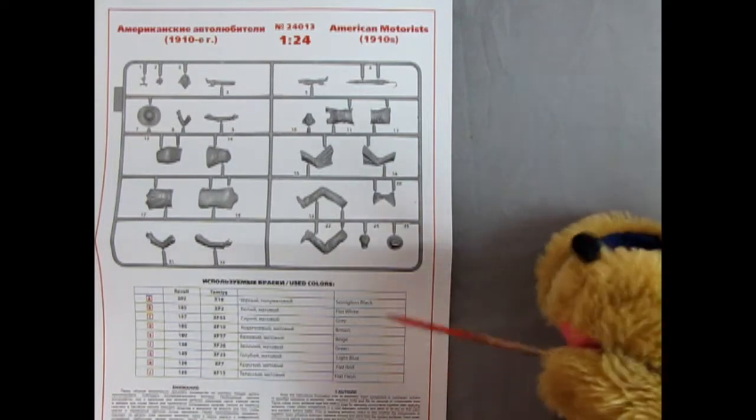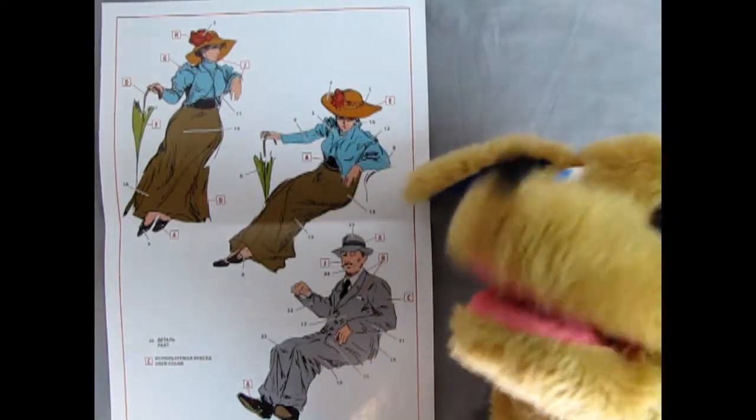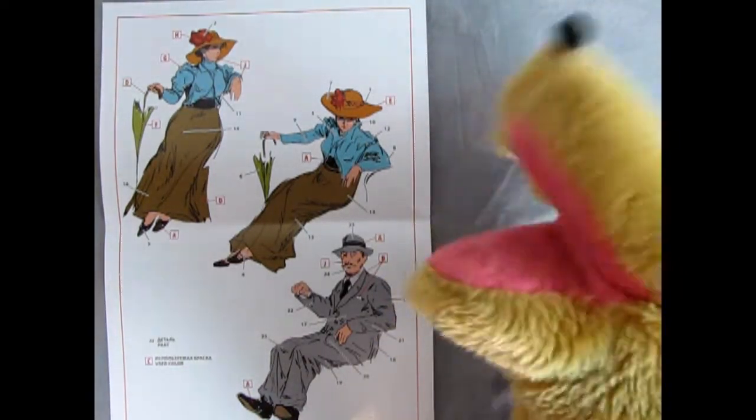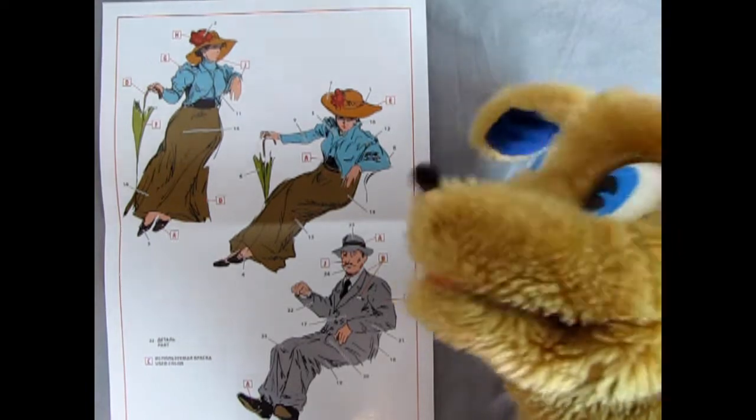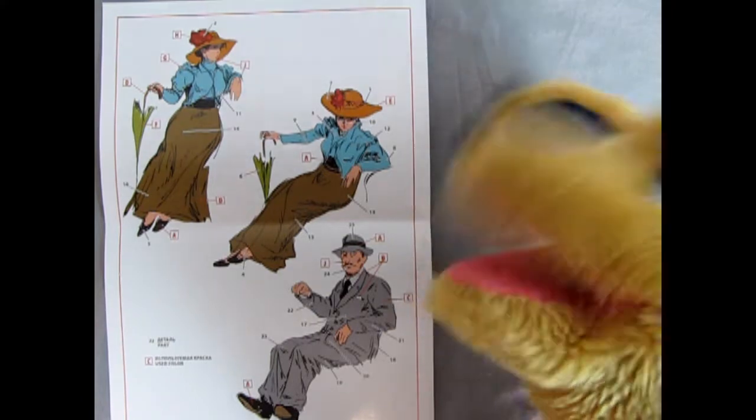And what we have in English like semi-gloss black, flat white, grey, brown, etc. Now turning the instructions around we can see the lovely mademoiselle sitting up there with the parasol looking out the side of the car as well as a look from the upper three quarters.